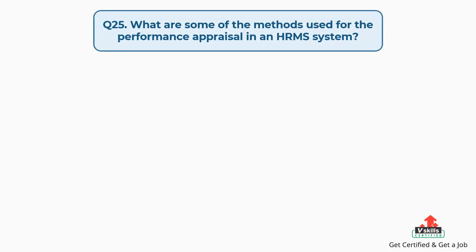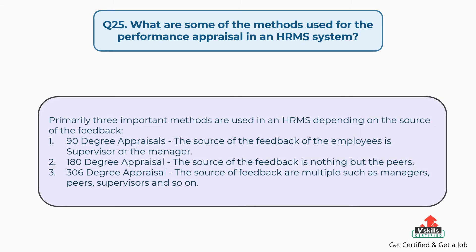Question number 25: what are some of the methods used for performance appraisal in an HRMS system? The answer is, primarily three important methods are used in an HRMS depending on the source of feedback. Firstly, 90-degree appraisals, where the source of feedback is the supervisor or manager. Then, 180-degree appraisal, where the source of feedback is peers. Lastly, 360-degree appraisal, where the source of feedback is multiple, such as managers, peers, supervisors, and so on.